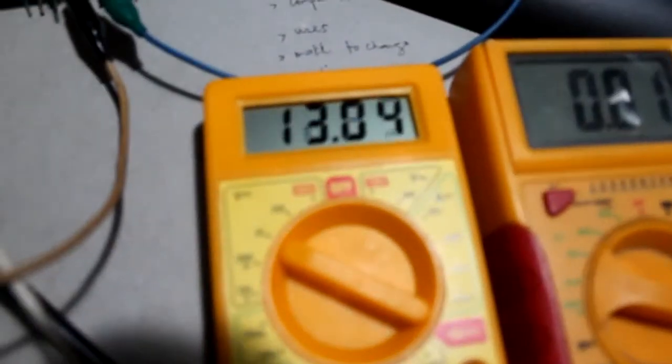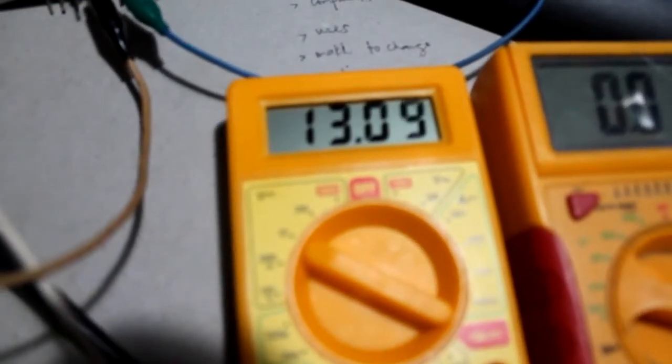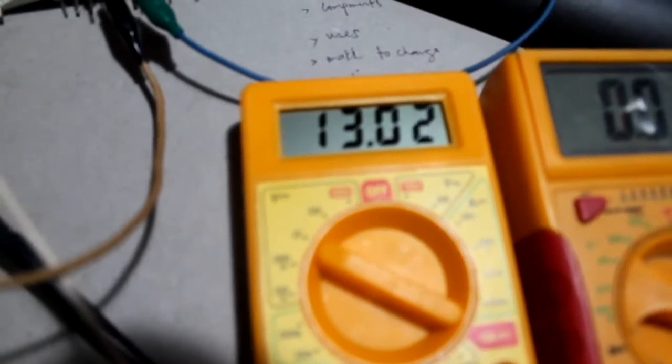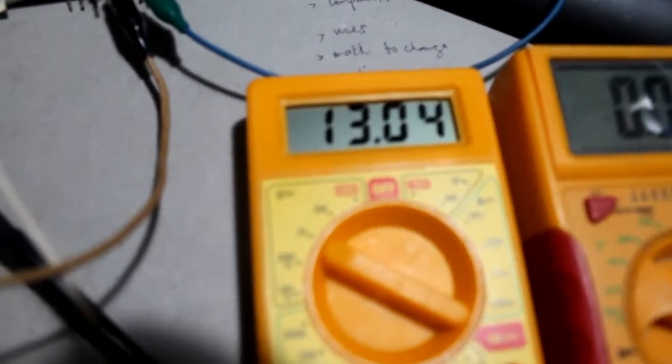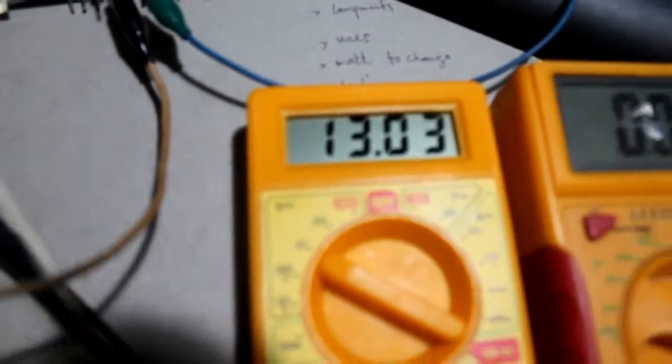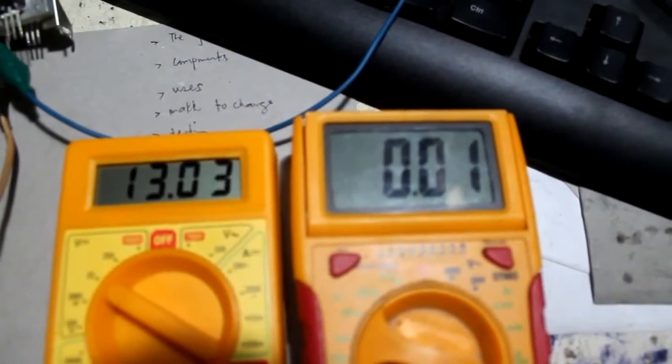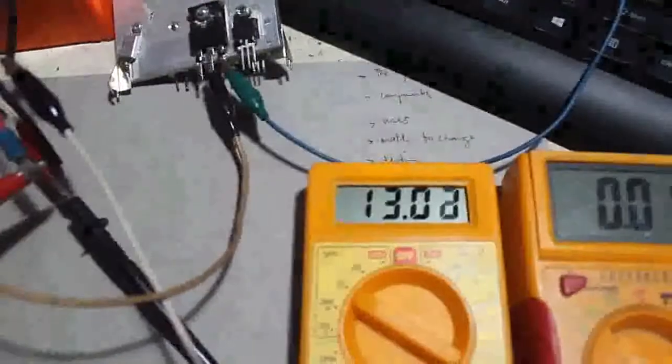We can see now that the battery is 13.2V. So, the circuit doesn't draw any power since I've disconnected the connections from the circuit to the small battery.